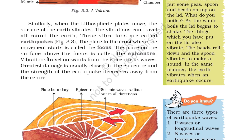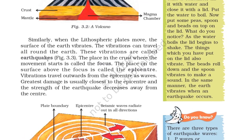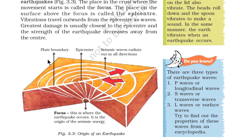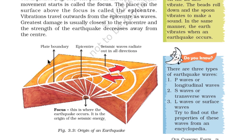Vibrations travel outwards from the epicenter as waves. The greatest damage is usually closest to the epicenter, and the strength of the earthquake decreases away from the center. The focus is where the earthquake occurs and is the origin of the seismic energy. Seismic waves radiate out in all directions.